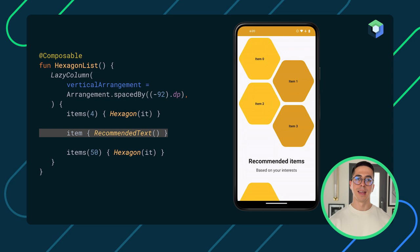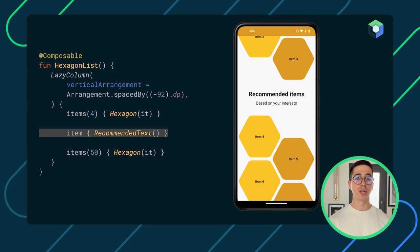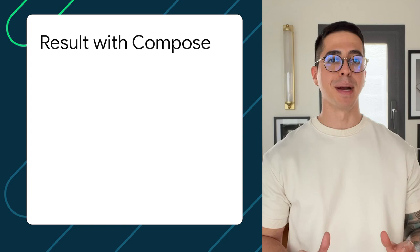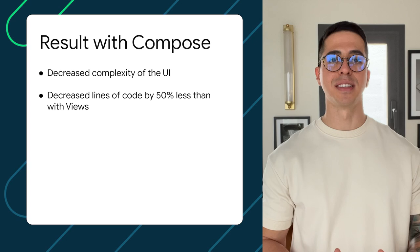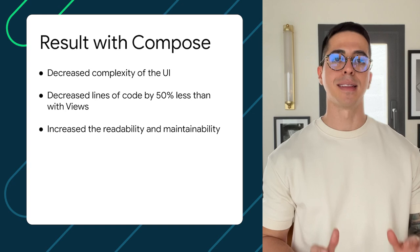And check how easy it is to add another item type to our LazyColumn. With just one line of code, we can separate two sections in our list. By migrating to Compose, we decreased the complexity of our UI. We also decreased the length of code by 50% compared to views, which improves the readability and maintainability of our feature.